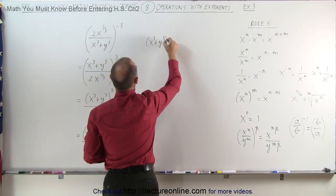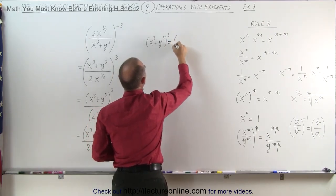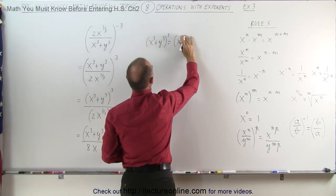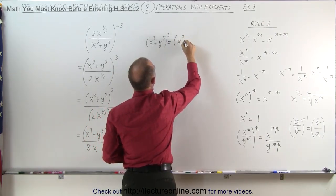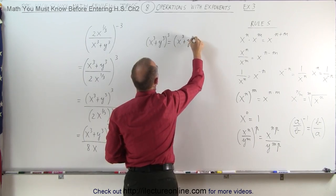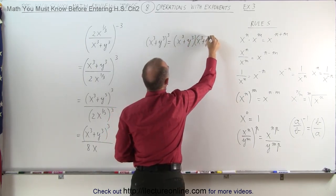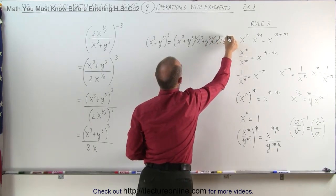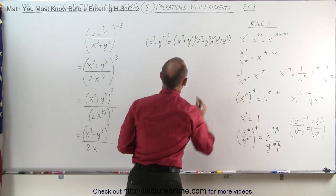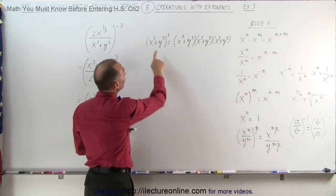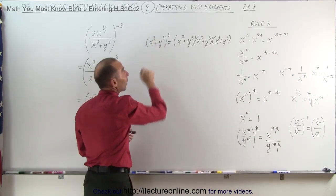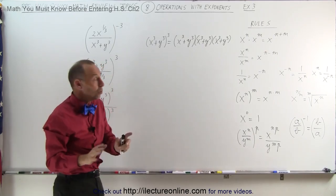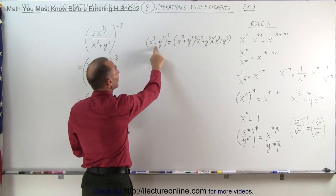Also, the numerator here we have x cubed plus y cubed to the 3rd power. What that really means, let me show you as follows. This is the quantity x cubed plus y cubed to the 3rd power. This is the same as saying x cubed plus y cubed times x cubed plus y cubed times x cubed plus y cubed.